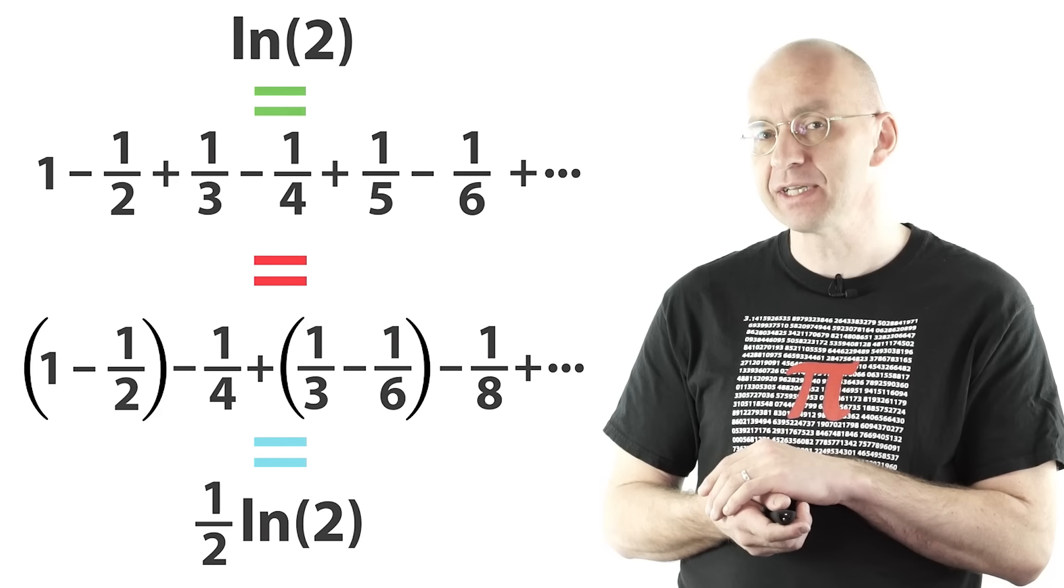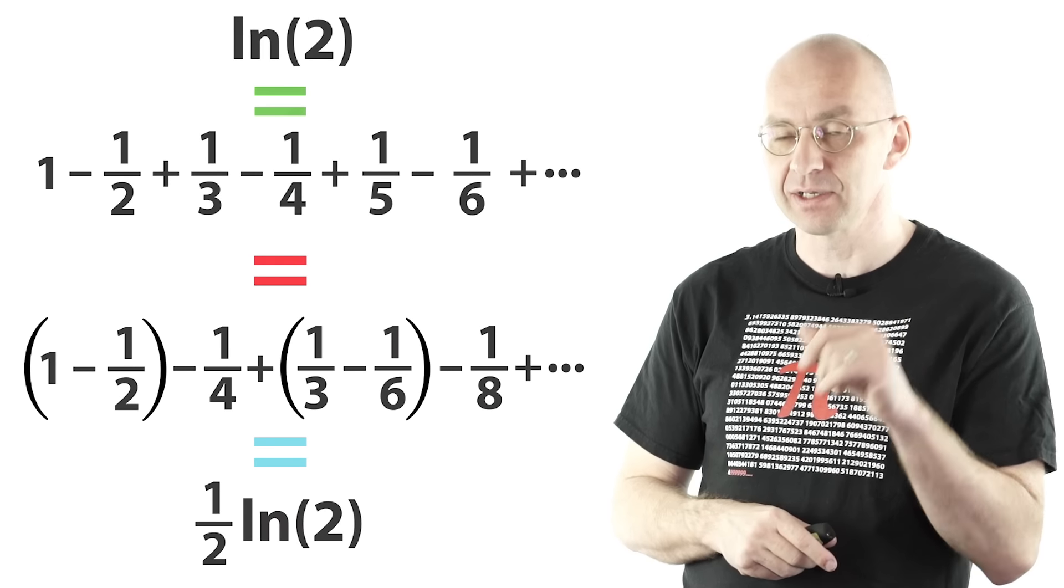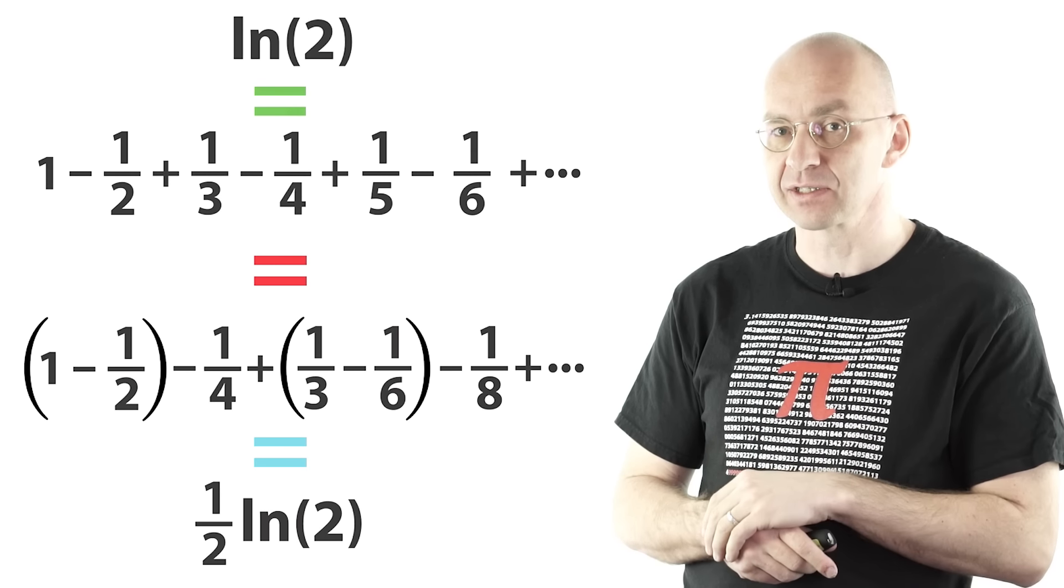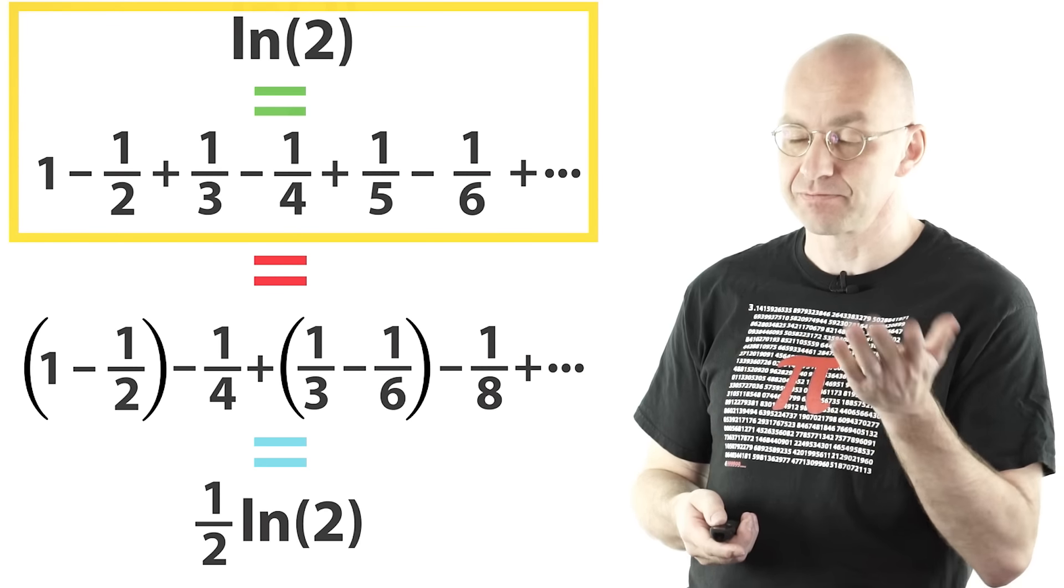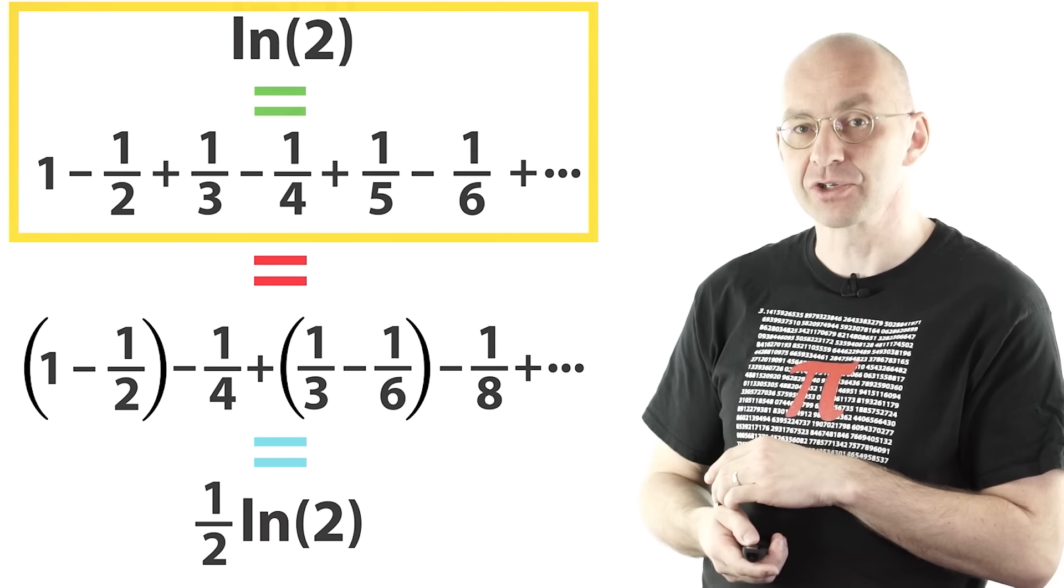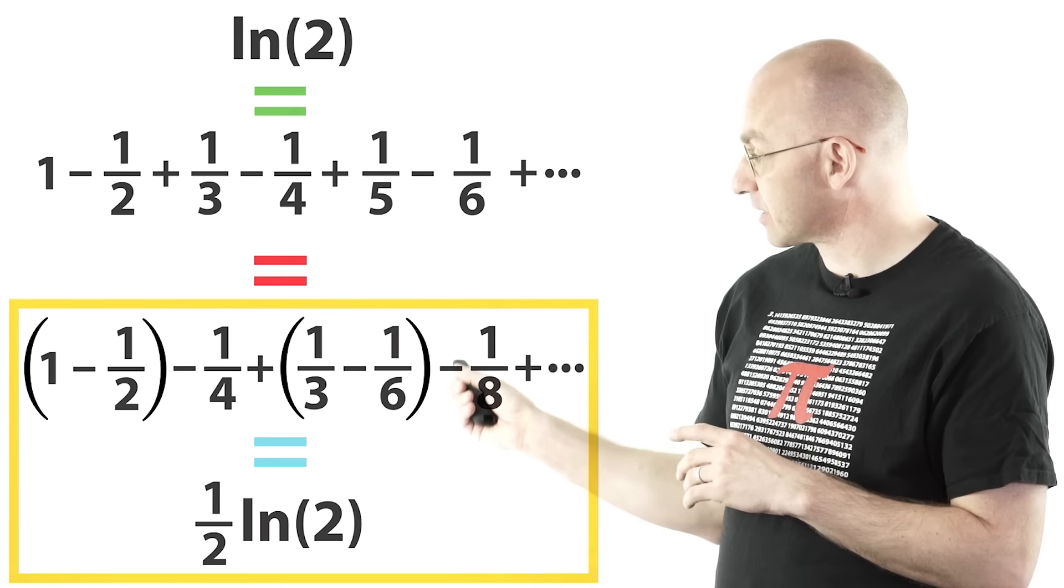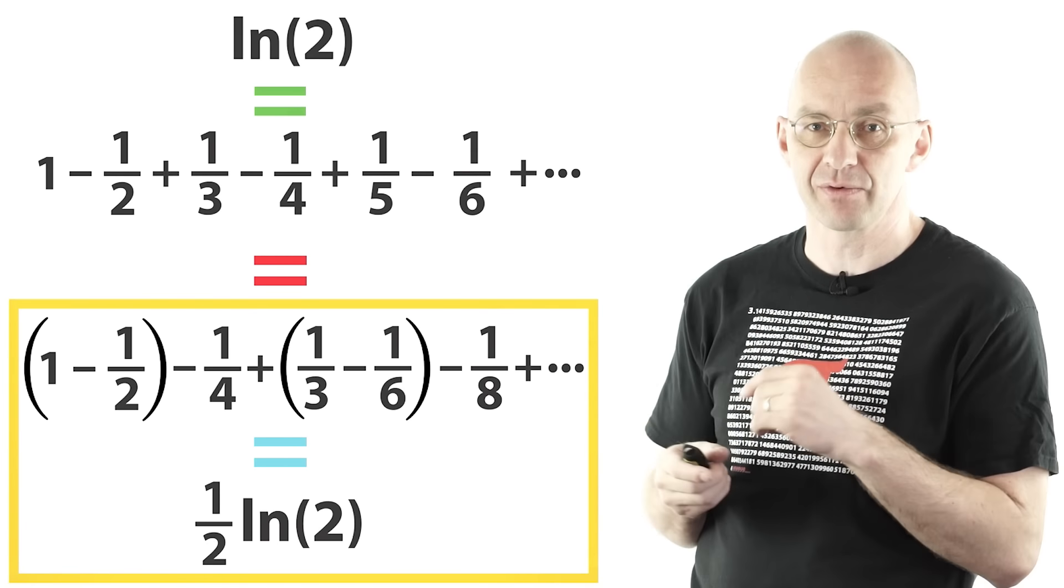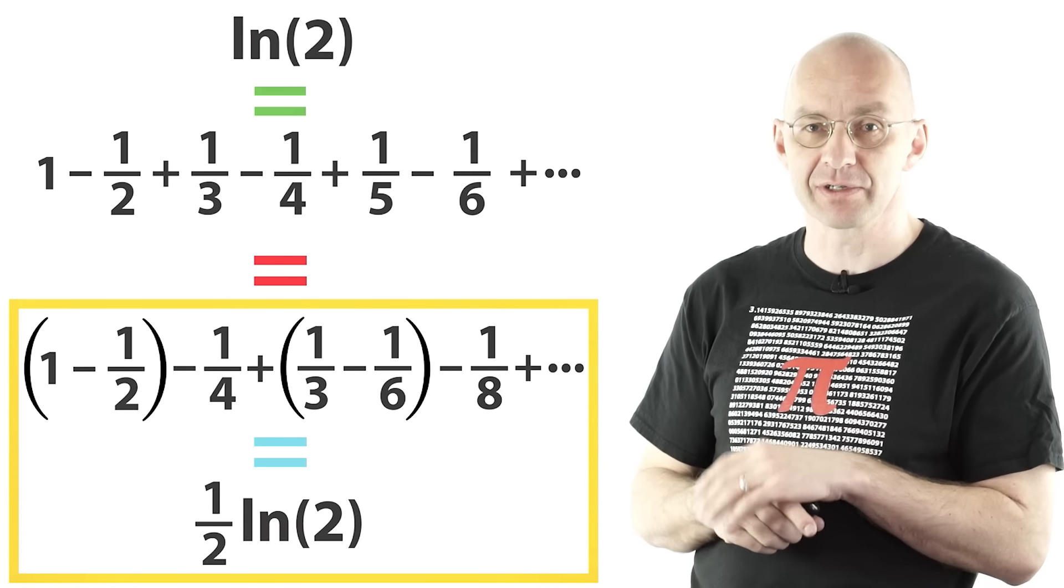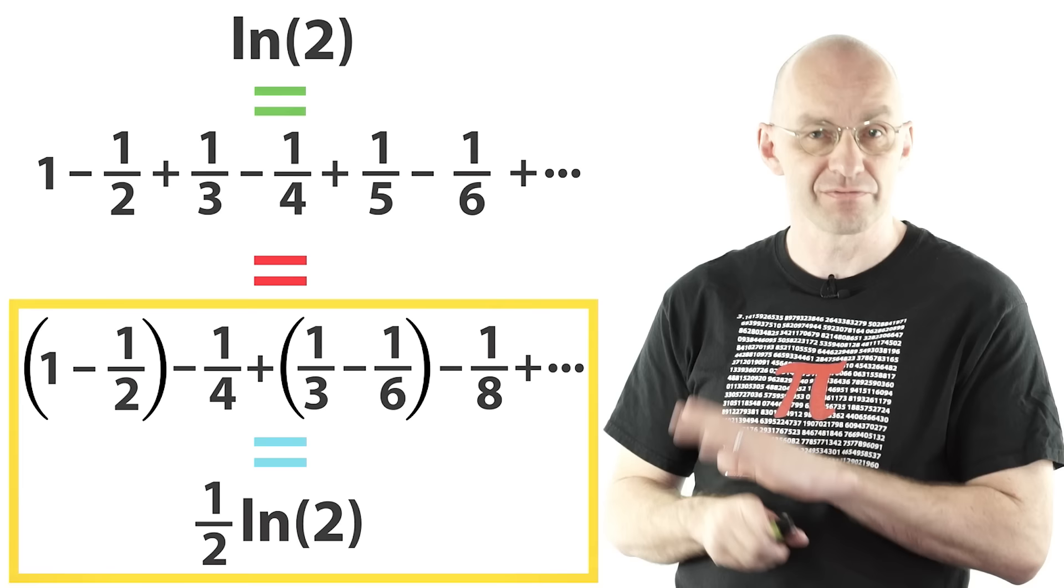So there were three different identities. Two of these are correct and one of these is not correct. The first bit, this is equal to log 2. Then the bottom bit is also correct. In fact that bracketing here, you can put in brackets any way you want. It's not going to change anything about this sum, it's always going to add up to 1/2 log 2.